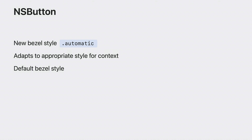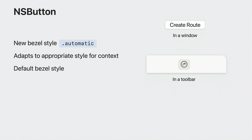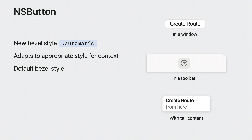The ButtonBezelStyle API has been updated, starting with a brand new bezel style: automatic. This bezel style will adapt to the most appropriate style depending on the contents of the button and where it is in the view hierarchy. For example, when the button is in a window, it will pick the push button style. When placed in a toolbar, it will pick the toolbar style. For tall content, it will pick the flexible push button style.